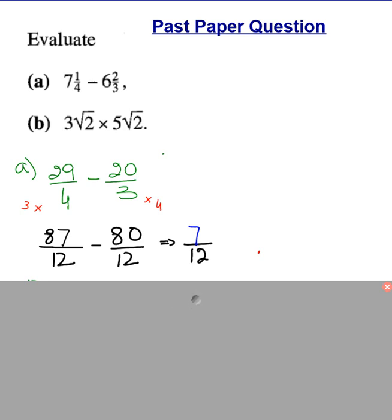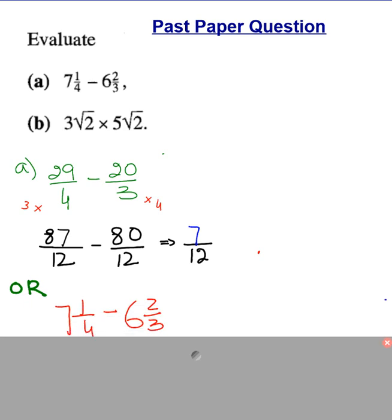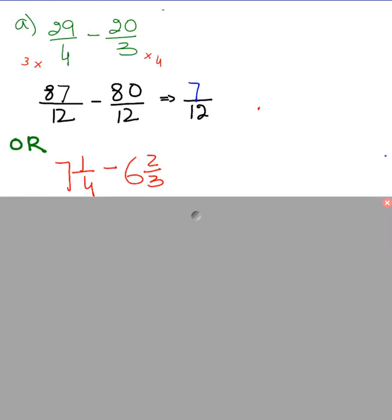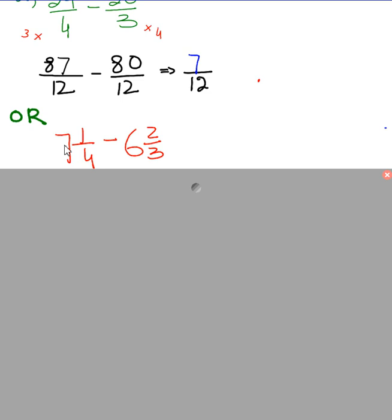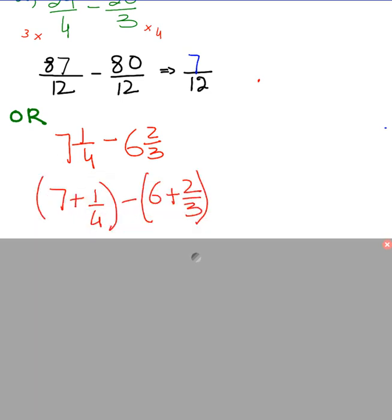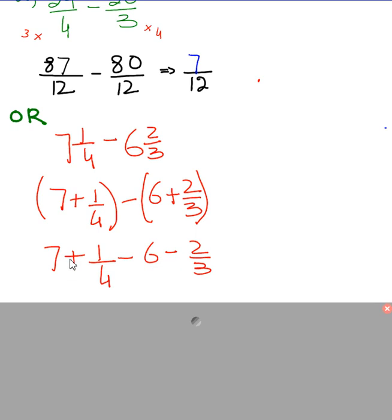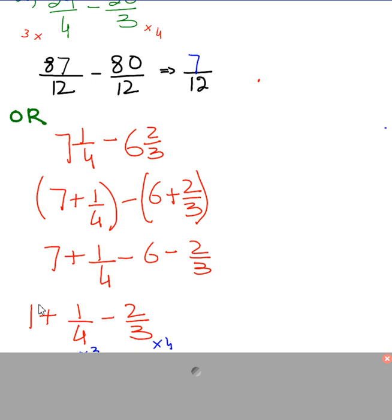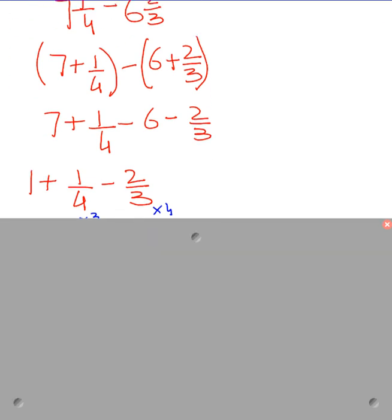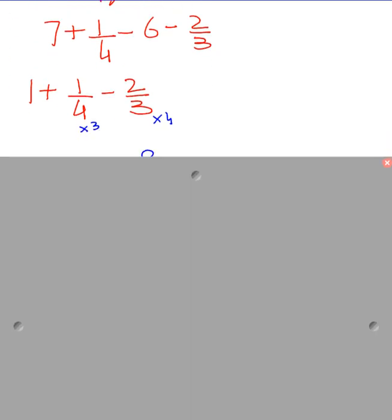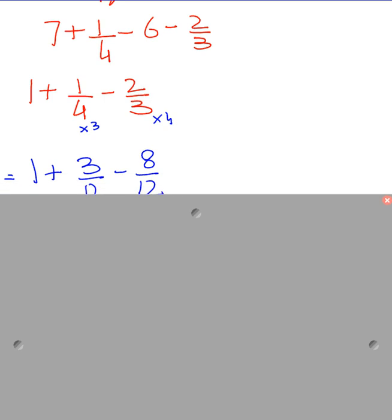Now if you are handling whole numbers separately, it means the meaning of this question, I mean this part mixed number, is 7 plus 1 upon 4. This means 6 plus 2 upon 3. If you remove the bracket, it is actually 7 minus 6. Now 7 minus 6 is 1. And what is left in fraction? 1 upon 4 minus 2 upon 3, and then you will deal the way you have done earlier, taking the LCM.